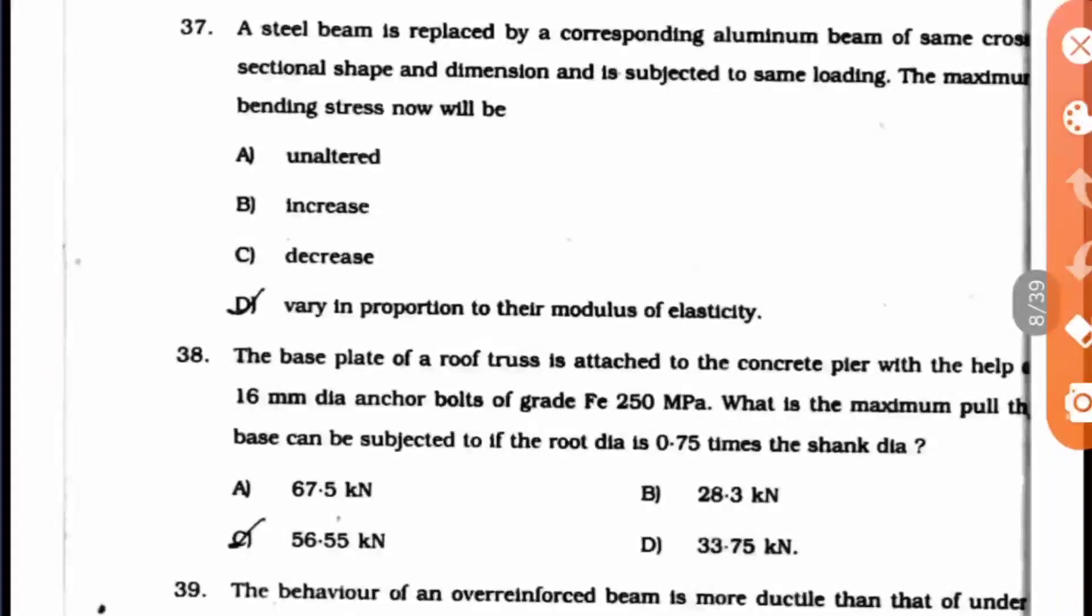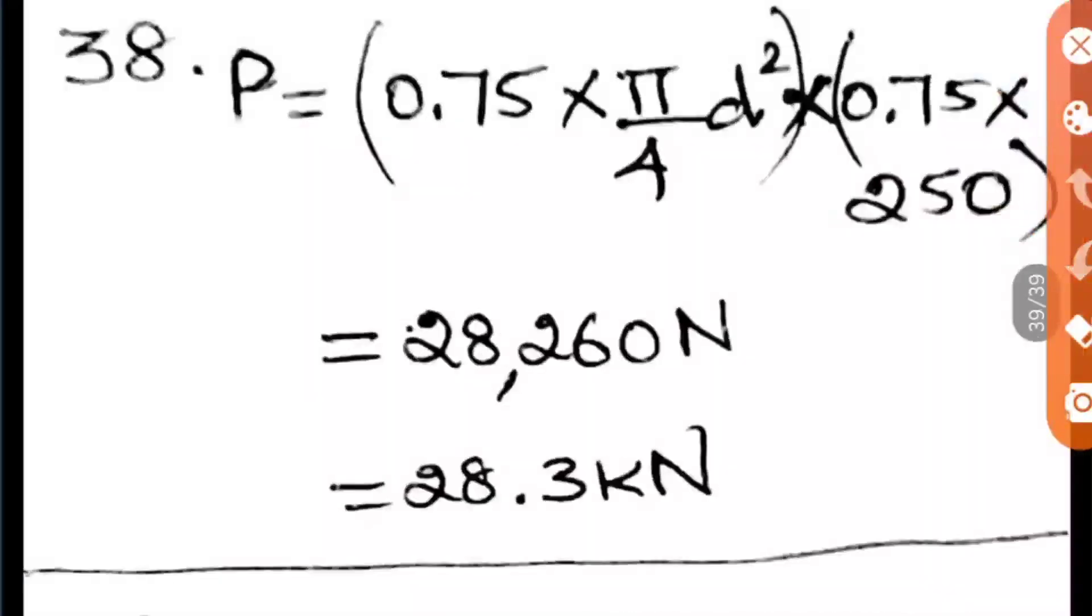Question 38: The base plate of a roof truss is attached to concrete power with the help of 16 mm dia anchor bolts of grade Fe 250 MPa. What is the maximum pull that the base can be subjected to if the root dia is 0.75 times the shank dia?